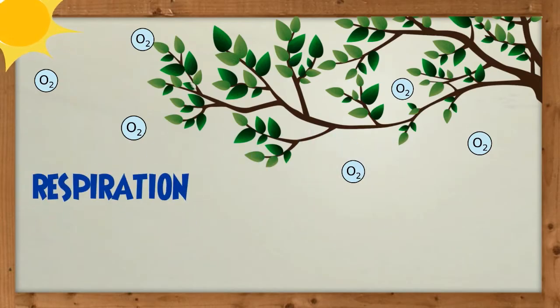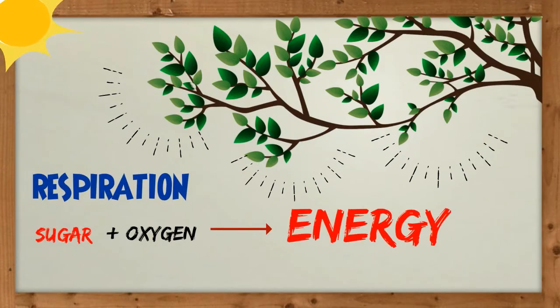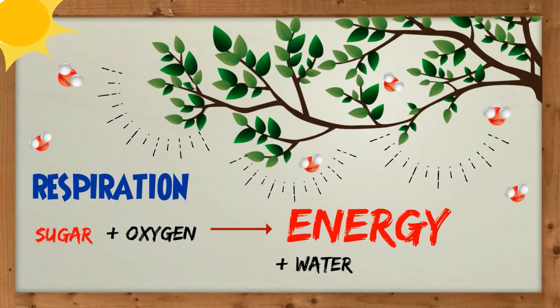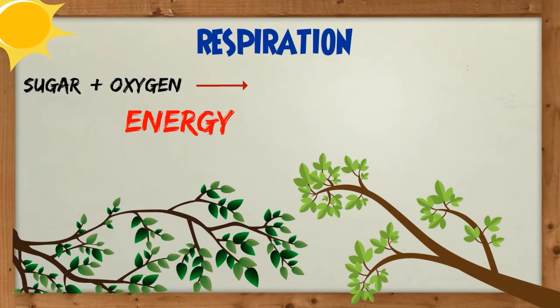During respiration, sugar reacts with oxygen to produce energy for the plant and the by-products are water and carbon dioxide. That is, sugar plus oxygen gives energy and water and carbon dioxide.